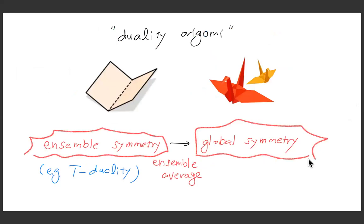That's what we call the duality origami — because initially the symmetry acts on the ensemble itself. So it's a symmetry of the ensemble — a symmetry compatible with the moduli space. A good example is the T-duality transformation. That was not a global symmetry because it connects different theories, but when you do the ensemble average, these symmetries are promoted to actual global symmetry. That is technically how you get an apparent global symmetry after ensemble average.